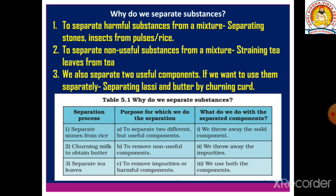The third reason is that we also separate two useful components when we want to use them separately — for example, separating lassi and butter by churning curd. When we stir and churn the curd, we get two useful things: one is lassi and the other is butter.